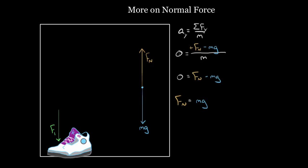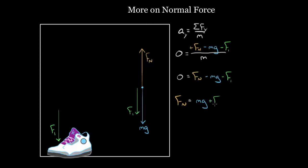Multiplying by m still makes that zero. But now in the force diagram I have another force, F1, that points down. So I'd have to subtract it when I find the net vertical force — a negative F1. When I solve for Fn, I add mg to both sides, then add F1 to both sides to cancel the negative F1, and I get mg plus F1.